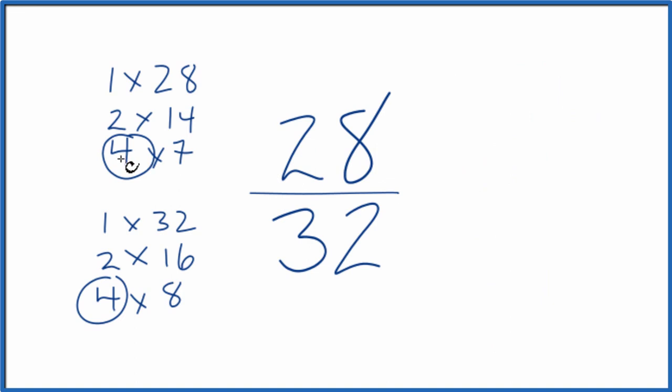So 28 divided by 4, that gives us 7. And 32 divided by 4 gives us 8. And we've simplified the fraction 28/32 down to 7/8.